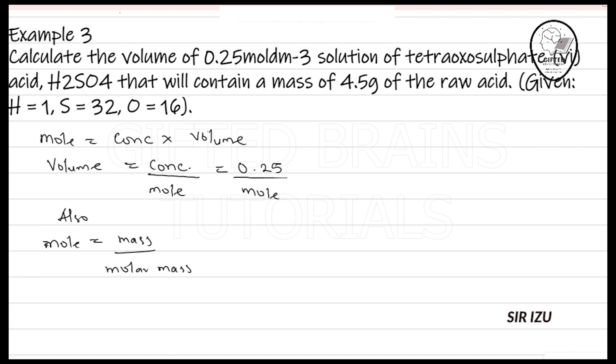What is the molar mass of H2SO4? Hydrogen is 1 times 2, plus sulfur is 32 times 1, plus oxygen is 16 times 4. On evaluation, we have 98 grams per mole. That is the molar mass. I will simply say that my mole here will be mass given to me, 4.5 grams, over molar mass 98. If we do this, we will have 0.046 mole. I've gotten my mole now.